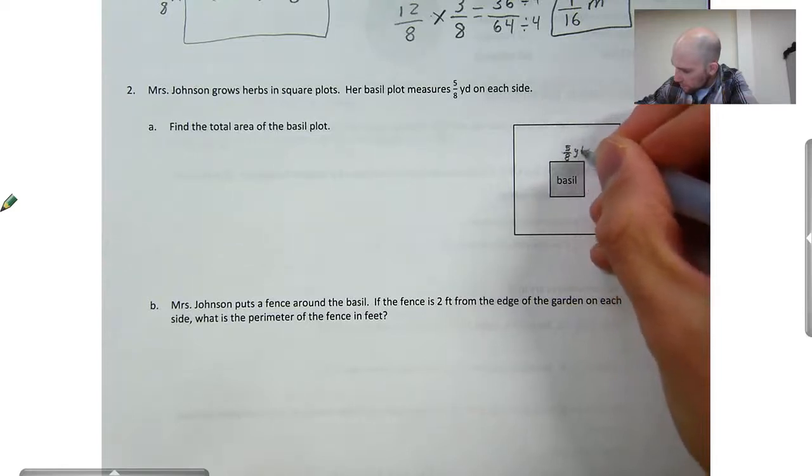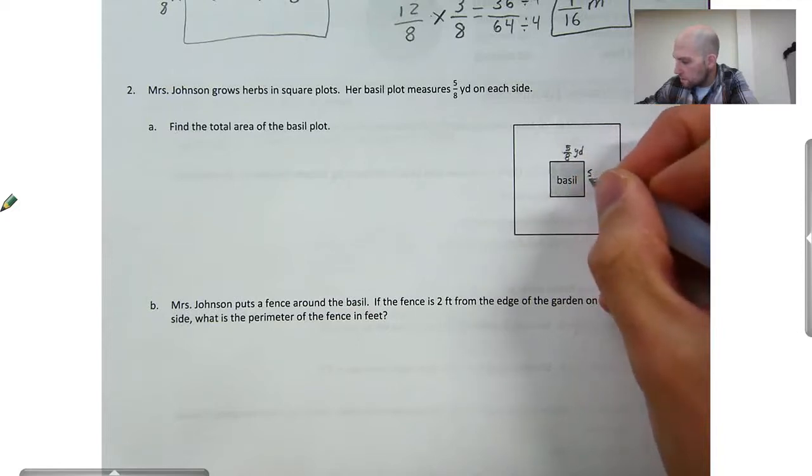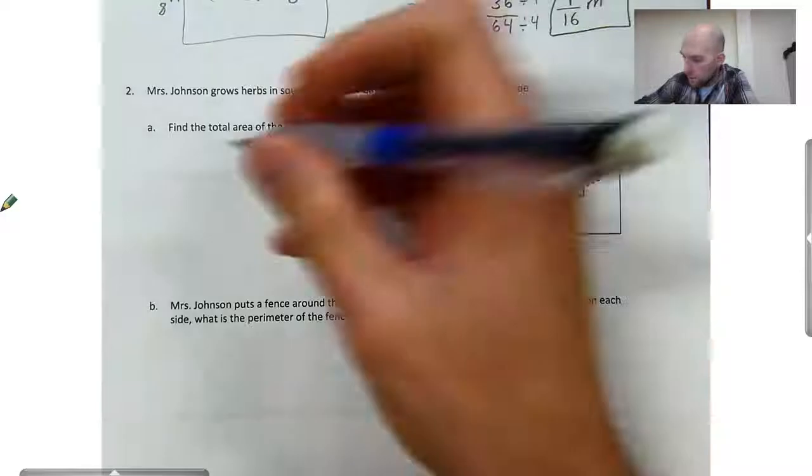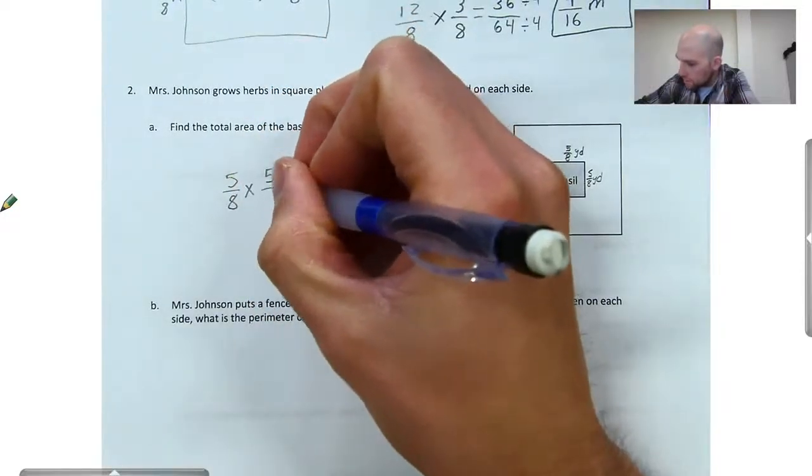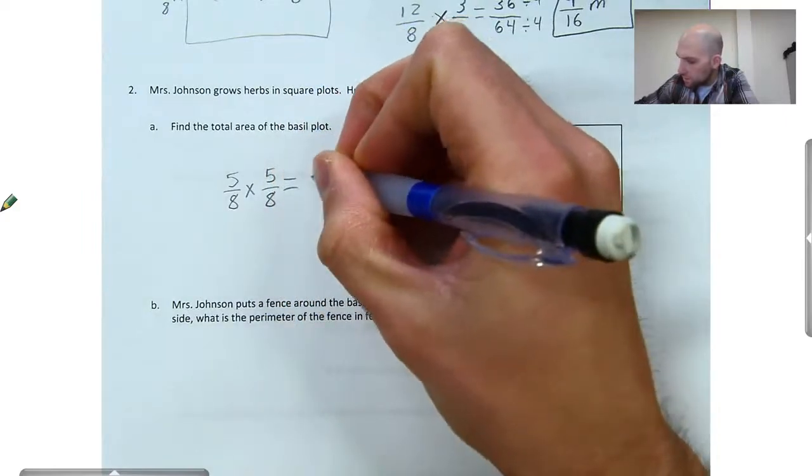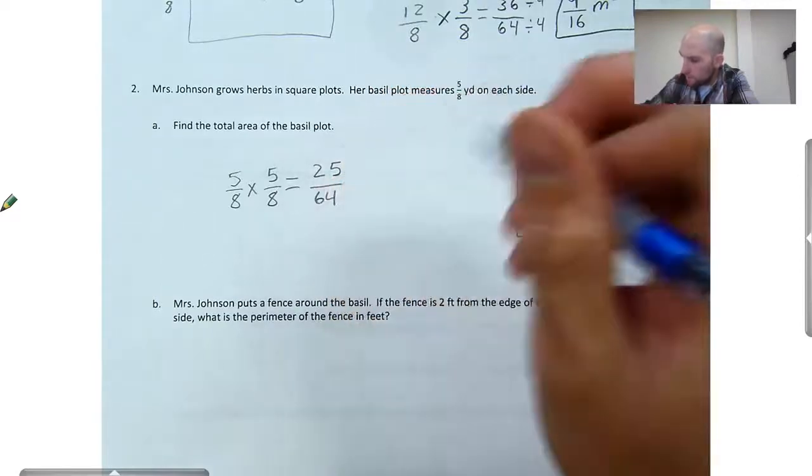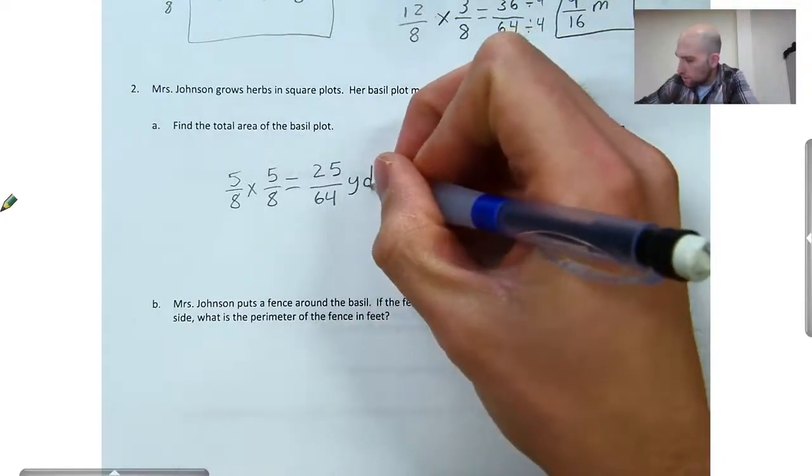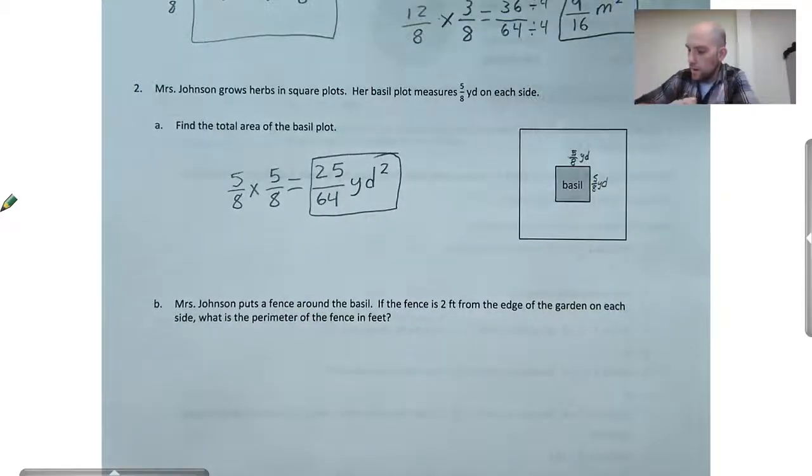And this side is five-eighths of a yard. So I'm just going to multiply those two together to find the area. So I'll have five-eighths times five-eighths. That's just going to give me twenty-five sixty-fourths. And that'll be in square yards. So there's my area.